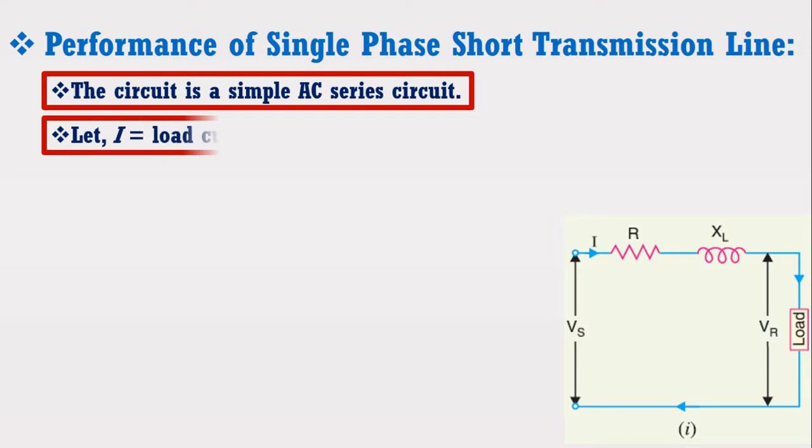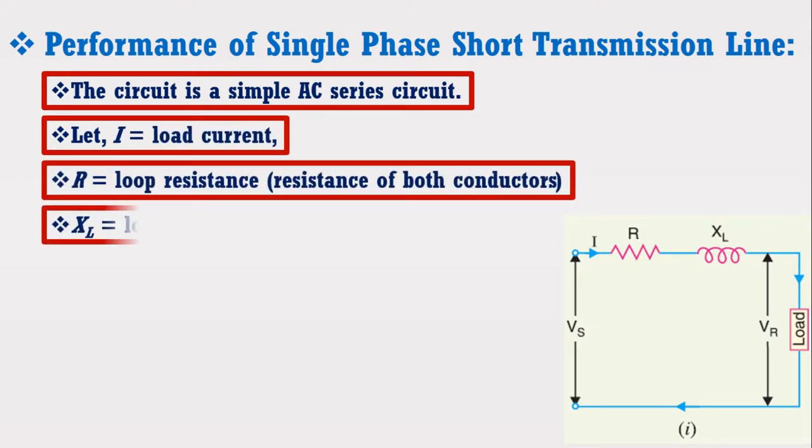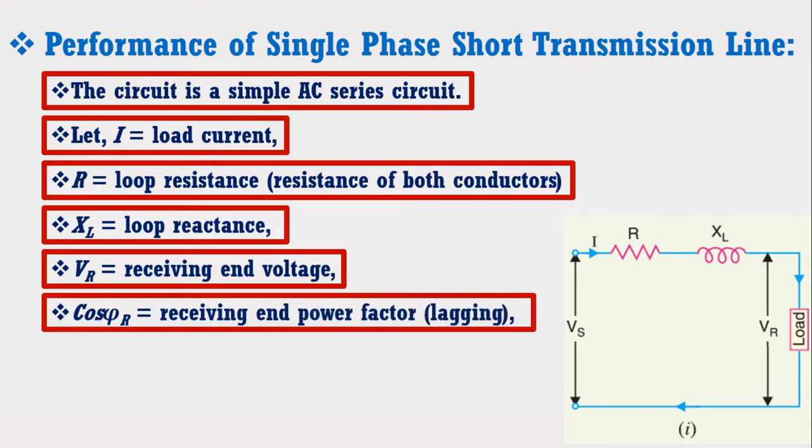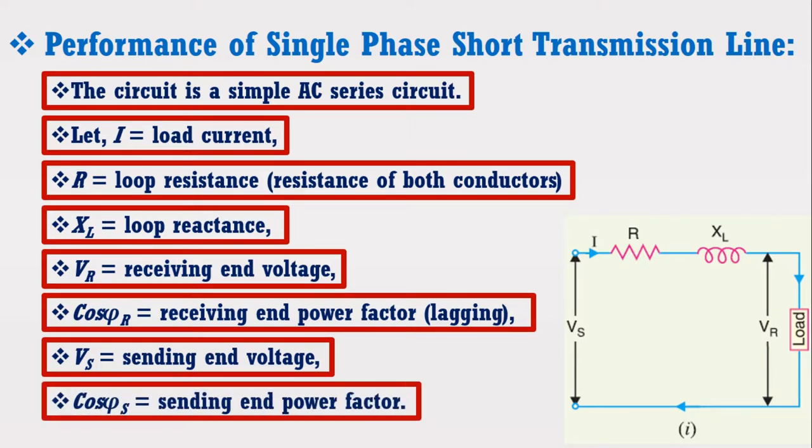Let I is the load current, R is the loop resistance, XL is the loop reactance, VR is the receiving end voltage, cos phi r is the receiving end power factor, VS is the sending end voltage, cos phi s is the sending end power factor.